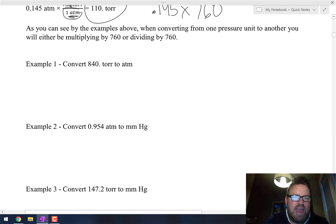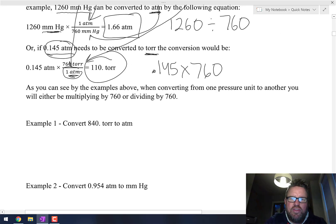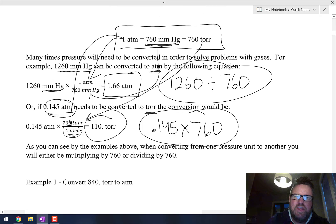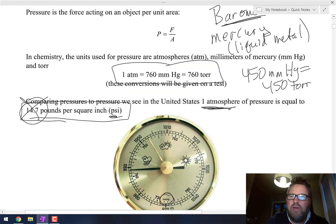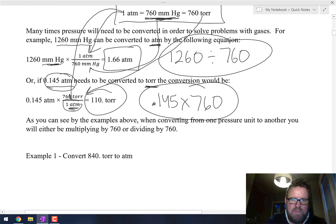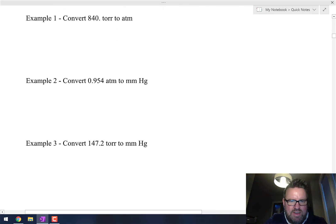Let's do a couple more examples here. Basically, as you can see by the examples above, when you're converting from one pressure unit to another, you're either going to be dividing by 760 or multiplying by 760, unless you're simply going from millimeters of mercury to torr or backwards or vice versa.